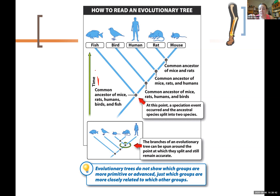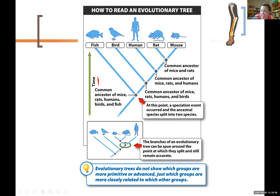This is going to be really important for one of the lab activities called the WIPO lab. So when you do that lab, you might want to watch this video again. Some things you need to know about the tree: the closer two groups are to where they connect — where the two branches meet — the more closely related they are. So rats and mice are more closely related to each other than either of those are to humans.